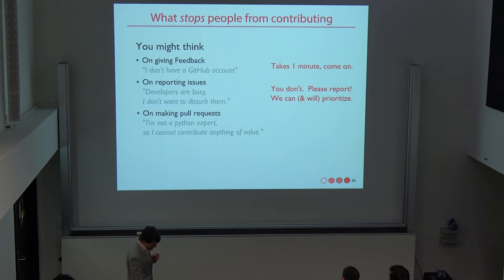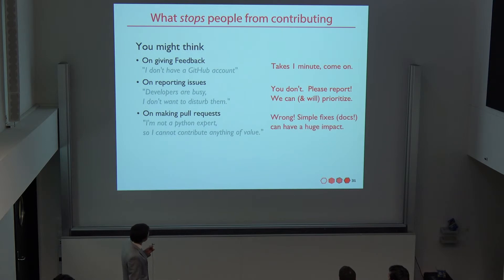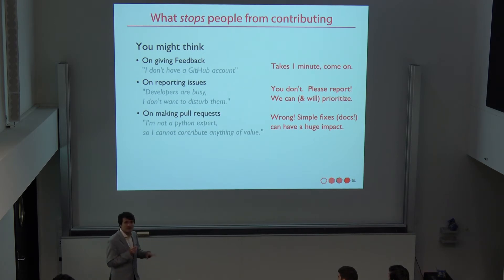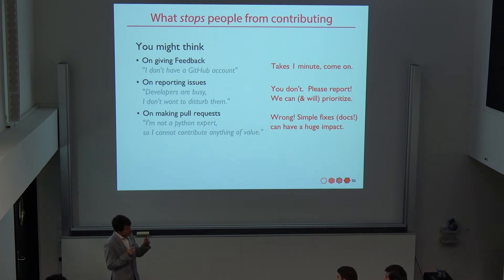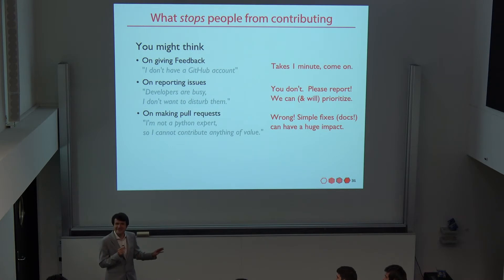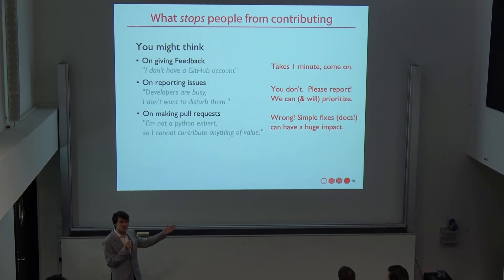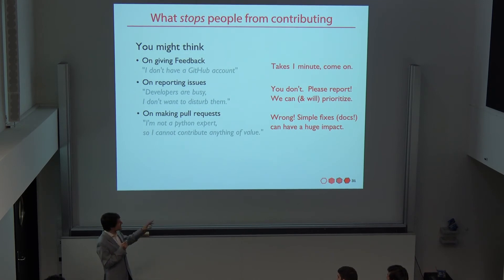And finally, on making pull requests, you might think 'I'm not a Python expert, can I contribute?' Of course you can. There are many ways of making simple fixes — for example, a typo in the code. Fawzi Mohamed just created a pull request that removed a comma from a JSON file. These pull requests are important. And there's also the documentation — these files are just restructured text, just standard text files. If there's something small missing from the documentation, please make a pull request.